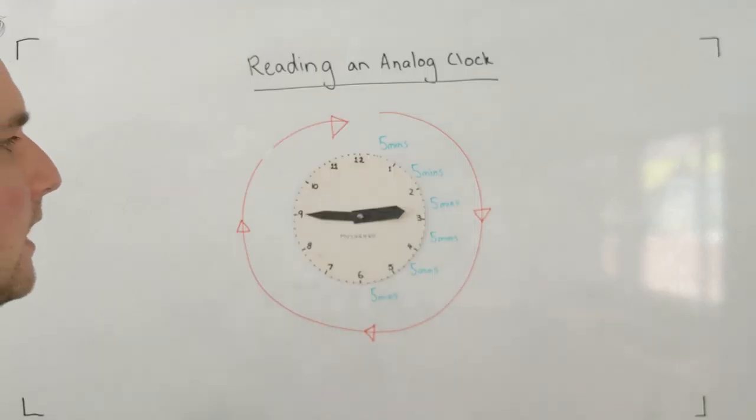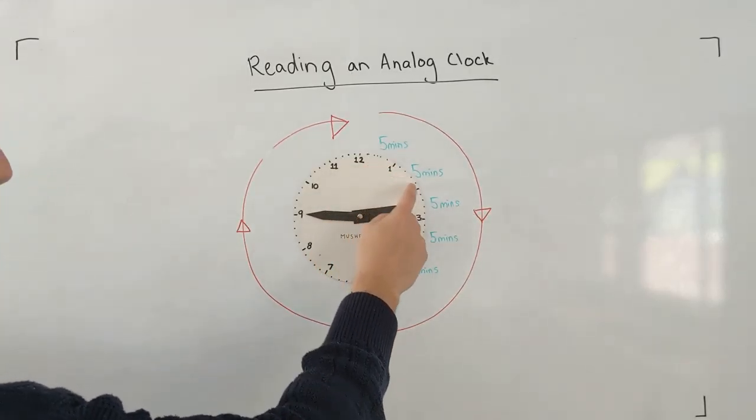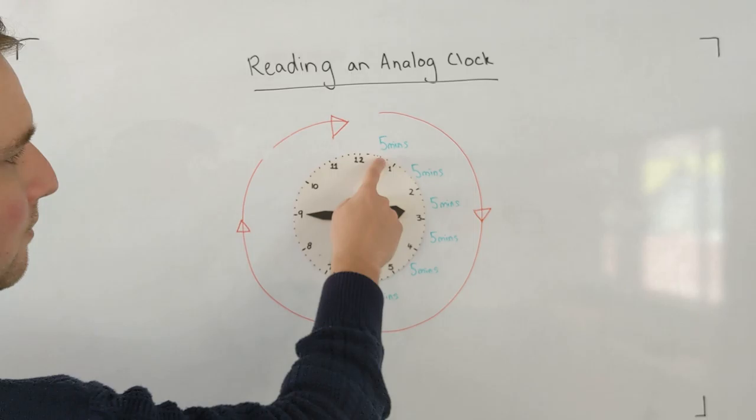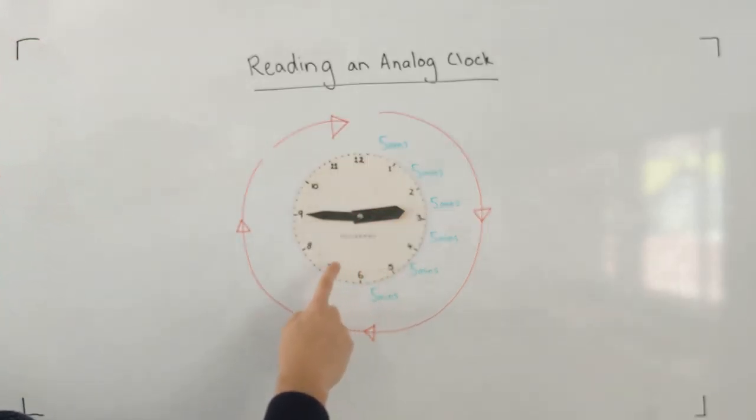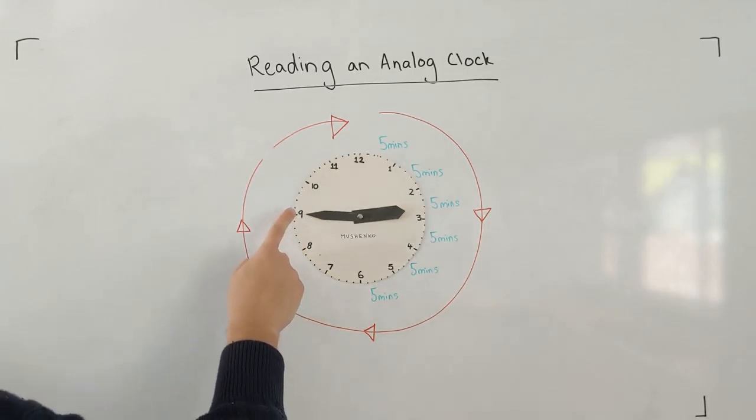That's telling me. I could count the number of five minute chunks that it's traveled. 5, 10, 15, 20, 25, 30, 35, 40, 45 minutes it has traveled around.